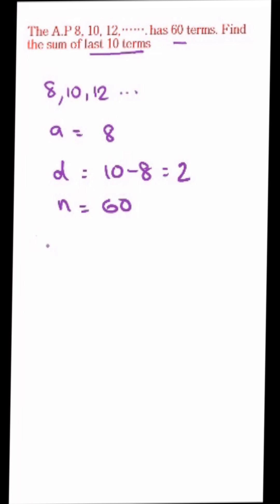So we need to find the sum of 51st term to 60th term. So find the 51st term first. That is a_n equals A plus (n-1) times d.